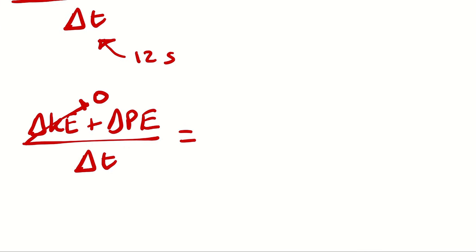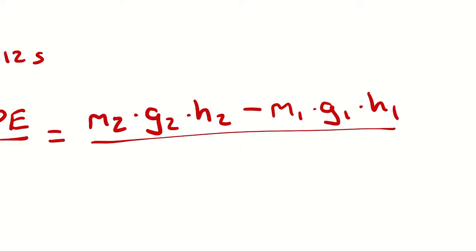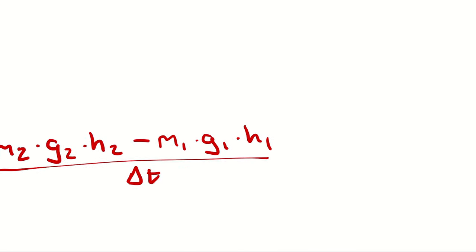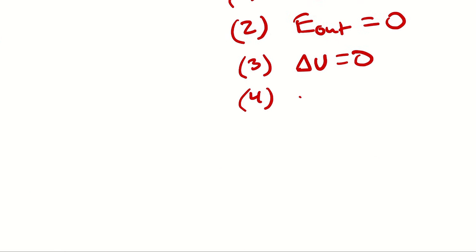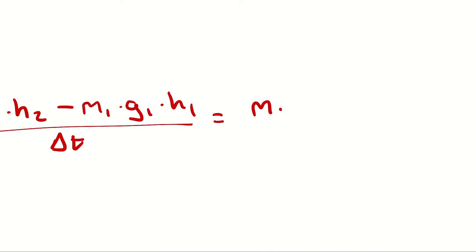The total change in potential energy would be mass at state 2 times gravitational acceleration at state 2 times height at state 2, minus mass at state 1 times gravity at state 1 times height at state 1, all divided by duration. Because I've assumed a closed system, the mass doesn't change and can be factored out. I'll assume standard gravitational acceleration of 9.81 meters per second squared, and factor out both mass and gravity to write this as mass times gravity times delta H divided by duration.